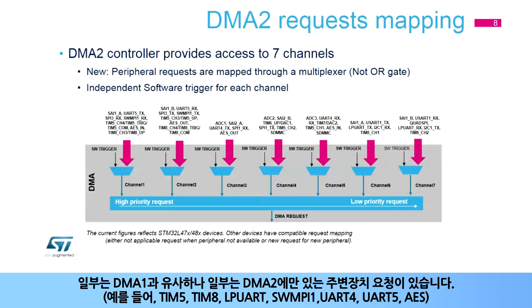For example, unique DMA2 peripheral requests include TIM5, TIM8, LP-UART, SWMPI-1, UART4, UART5, and AES.